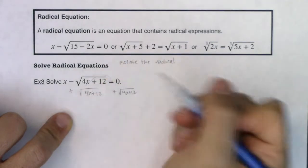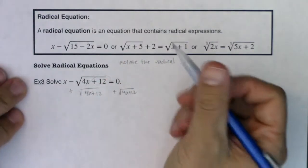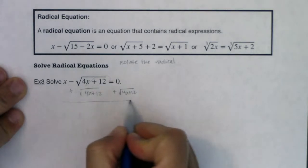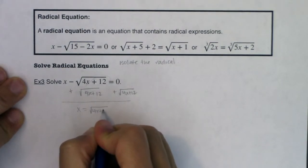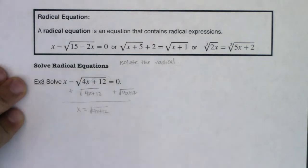These become like terms, so they're going to cancel out. So that leaves me with the equation, x equals the square root of 4x plus 12. And you'll take note now that my radical is isolated.